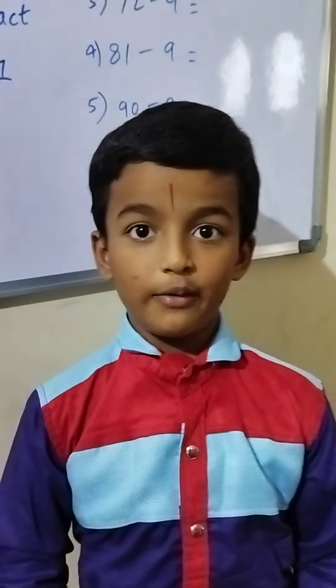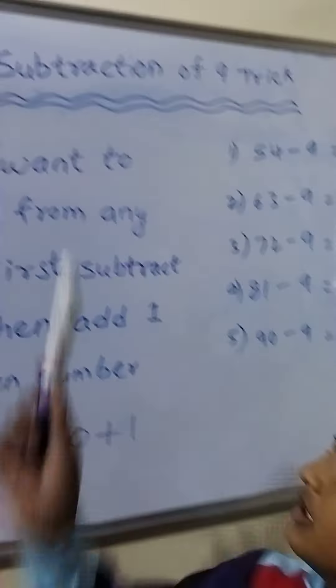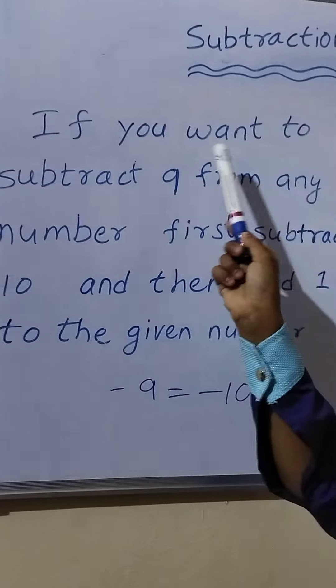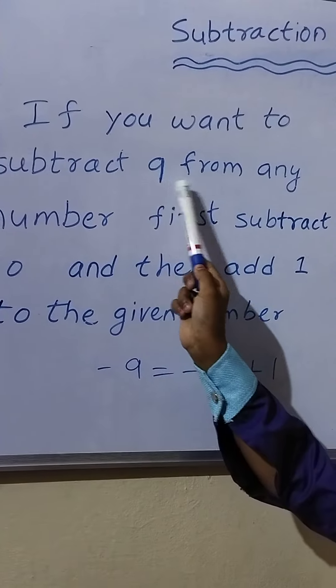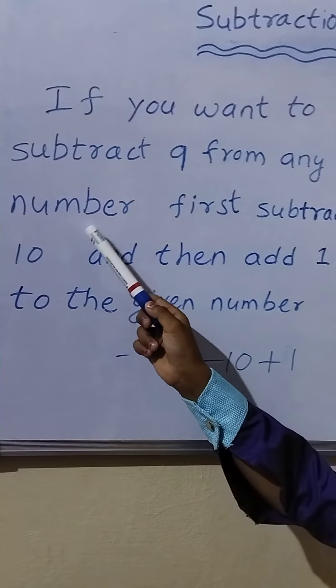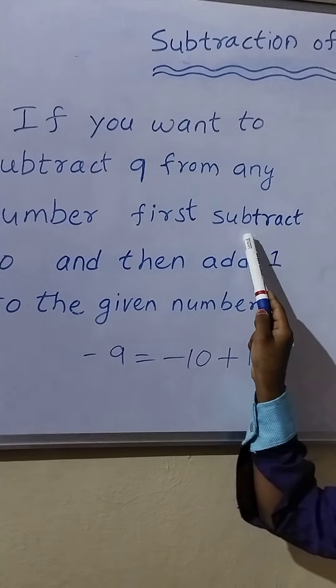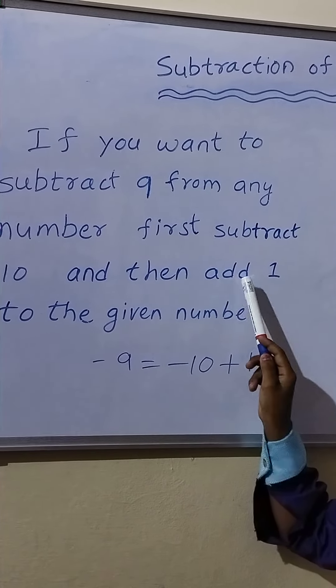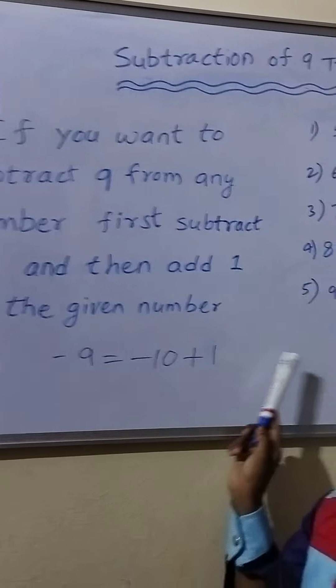Hi friends, today we are learning subtraction of 9 trick. If you want to subtract 9 from any number, first subtract 10 and then add 1 to the given number.